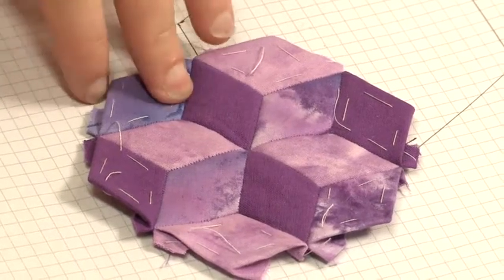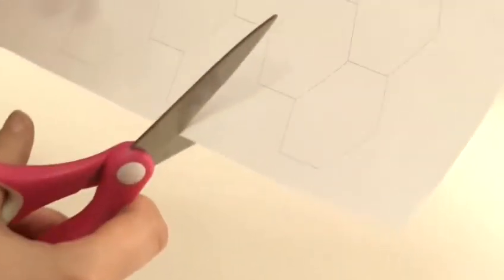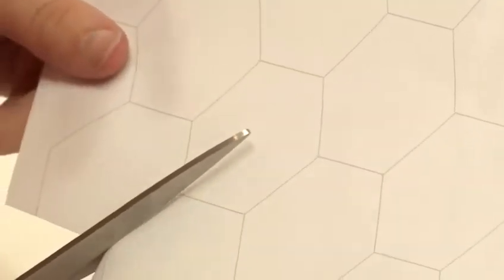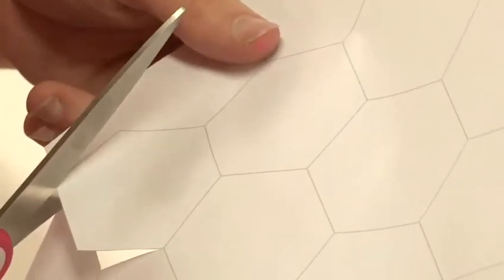So a hexagon quilt is made with English paper piecing. So for English paper piecing you need the paper pieces. So I'll take the pre-printed hexagons and cut a couple of hexagons out. Make sure to keep to the lines. Although English paper piecing can be quite forgiving if the line is slightly out.